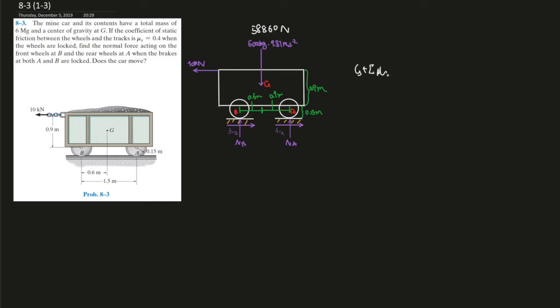Well, therefore, it is 58,860 newtons times the distance is 0.9 meters, right? This is the positive direction. It's going clockwise, so plus 10 kilonewtons times the distance. This is 0.9, wait, 0.9 plus, sorry. I was going to say I missed something. 0.5 meters,